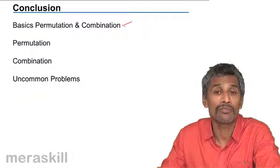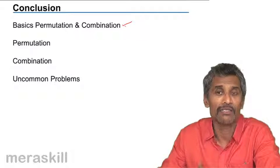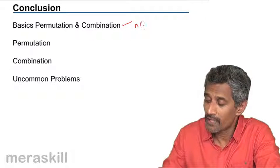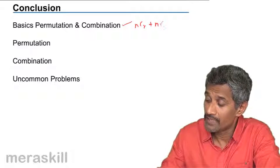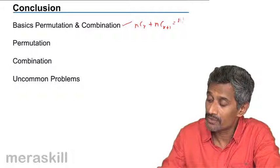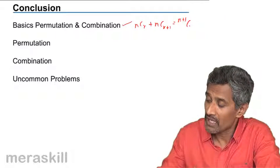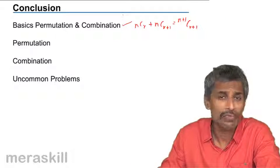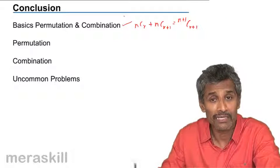similarly the various combination properties—that is NCR is equal to NC(N-R), NCR plus NC(R+1) equals N+1CR. These kind of formulae, you be thorough on how to apply them. That will cover more than 95% of your entire concept.